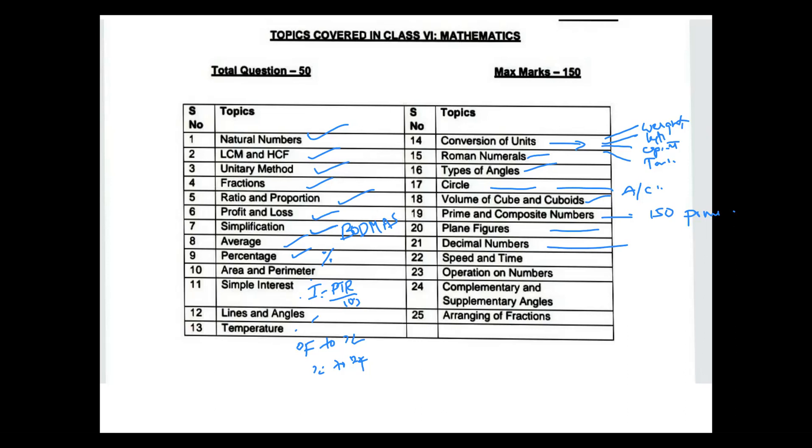Speed and time - the formula is distance equals to speed into time. Also conversion of speeds: kilometers per hour to meters per second, and meters per second to kilometers per hour. Changing of the units, times and seconds, seconds to hours. Operation of numbers: addition, subtraction, division and multiplication.